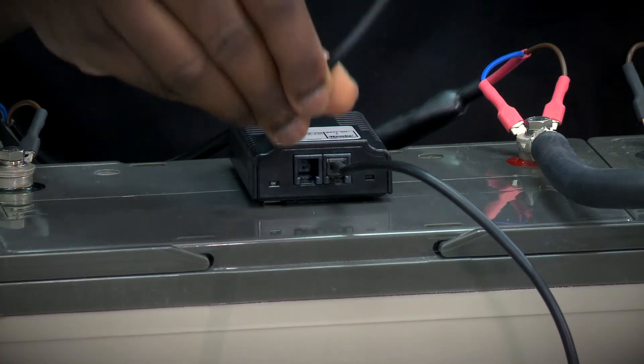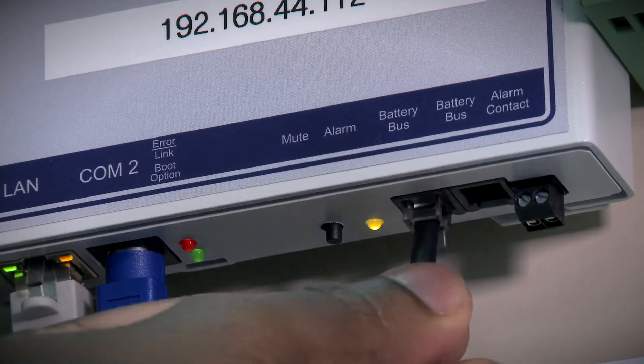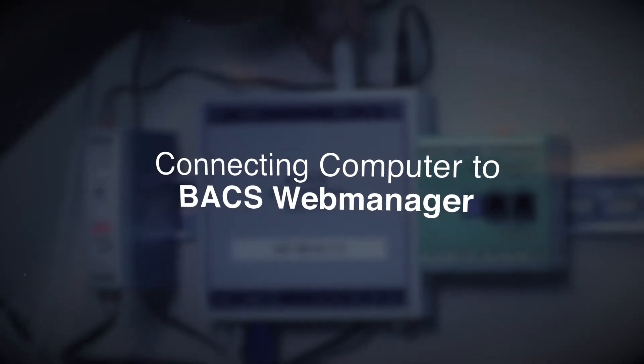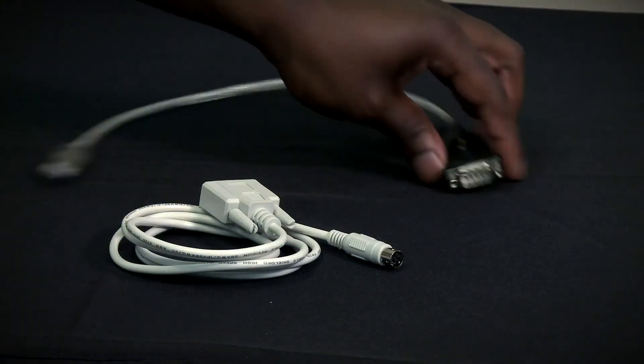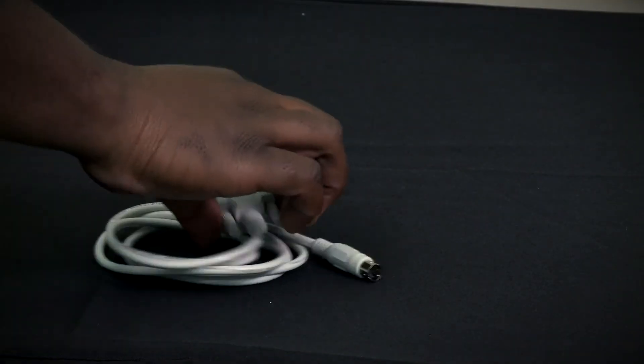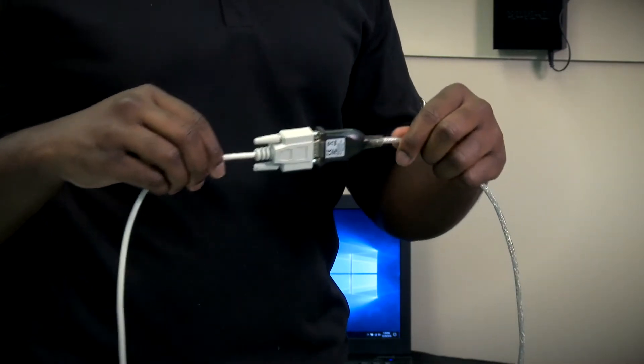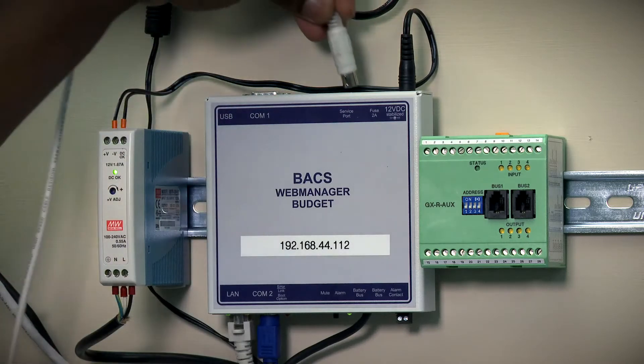Here the technician is installing the Bax bus cable from the Bax C module to the Bax web manager. Here are the cables that are required to connect your PC to the Bax web manager. The Bax USB to serial adapter connected to the USB on your PC to the service port of the Bax web manager.